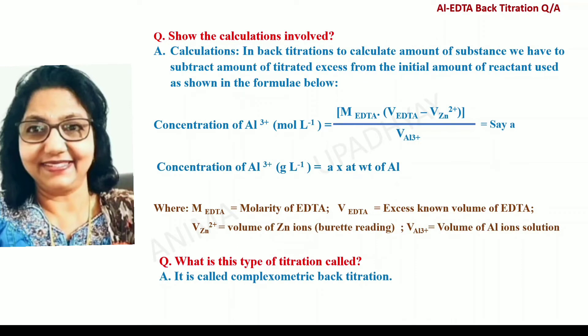Show the calculations involved. In back titrations, to calculate the amount of substance, we subtract the amount of titrated excess from the initial amount of the reactant used. The concentration of Aluminium (in moles per liter) = M_EDTA × (V_EDTA − V_Zn) / V_Al, where V_Al is the volume of the Aluminium solution taken. Multiplying this value by the atomic weight of Aluminium gives the concentration of Aluminium in grams per liter.